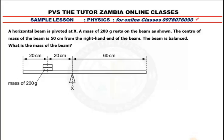A horizontal beam is pivoted at X — so this is the pivot. A mass of 200 grams rests on the beam as shown, so there's a mass here resting on the beam.